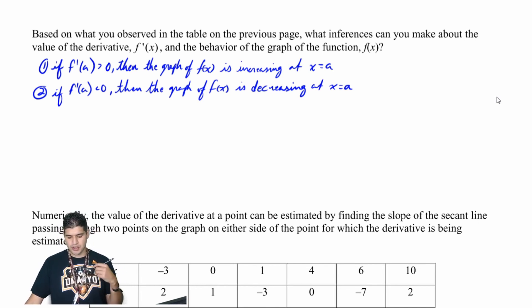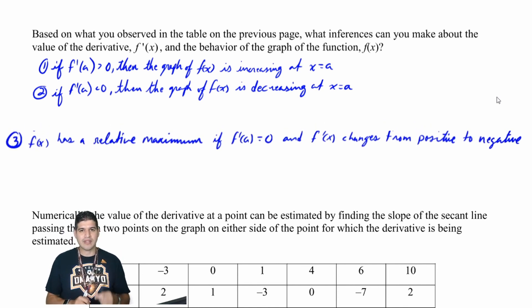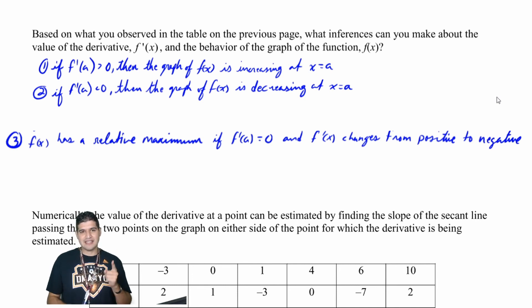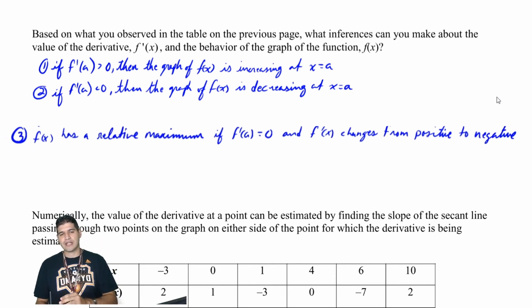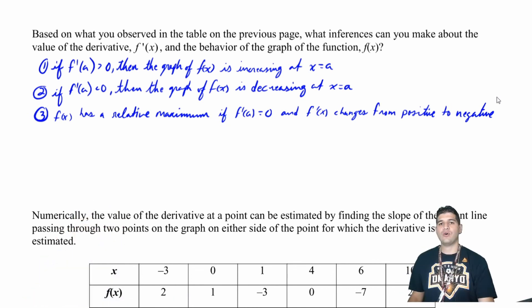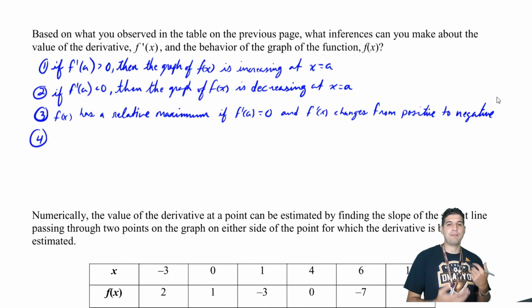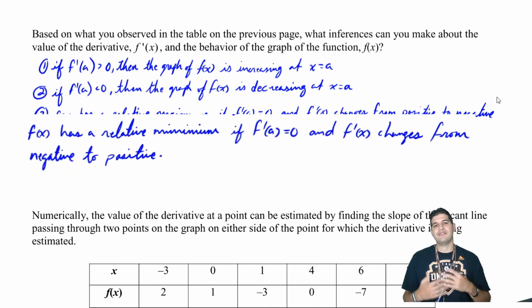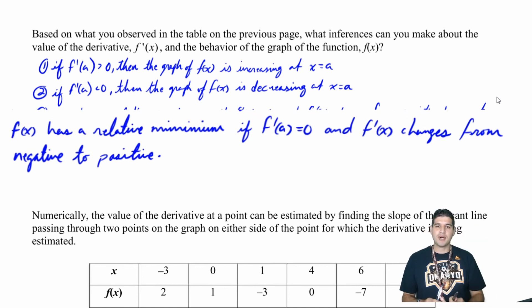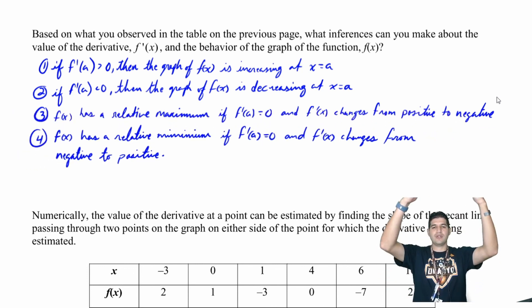Third, the function f of x has a relative maximum if f prime of a equals zero and f prime of x changes from positive to negative — the derivative goes from positive down to negative. Fourth, f of x has a relative minimum if f prime of a equals zero and f prime of x changes from negative to positive.